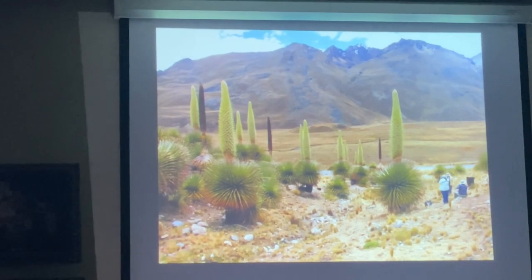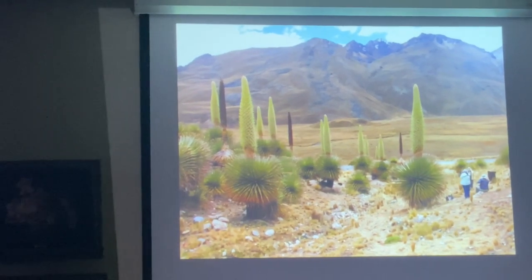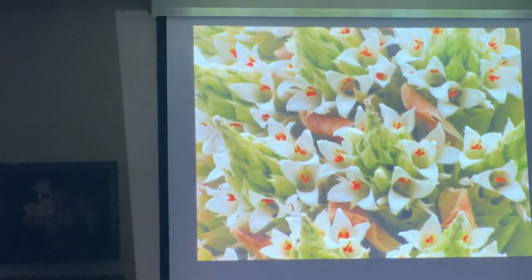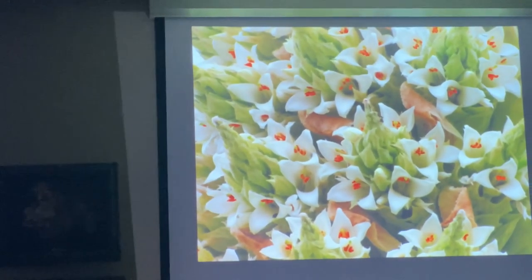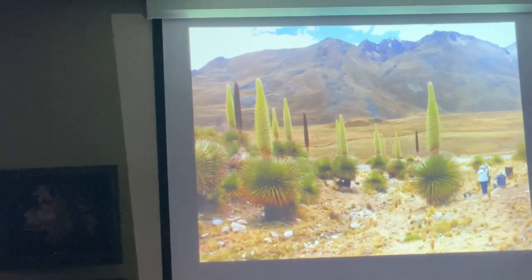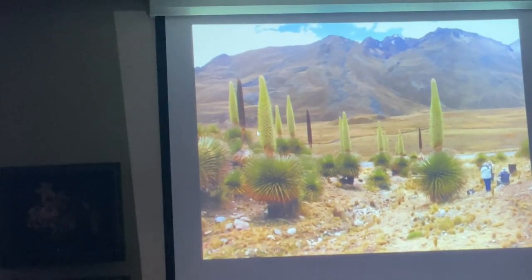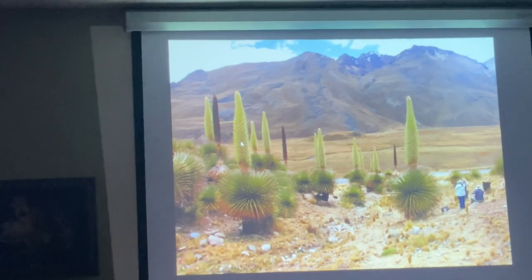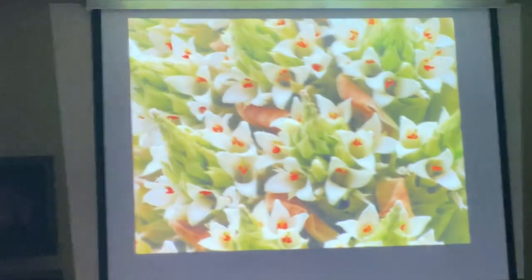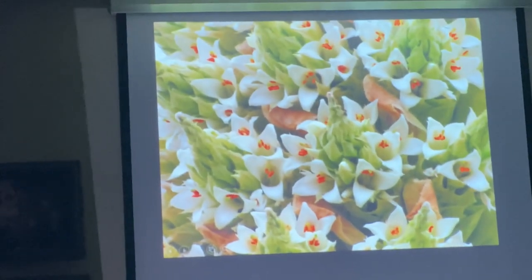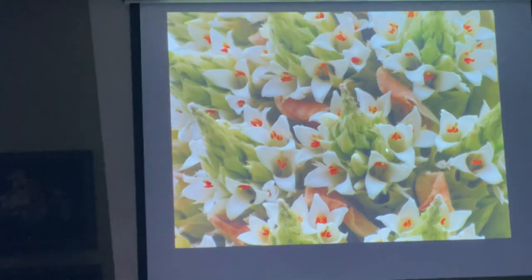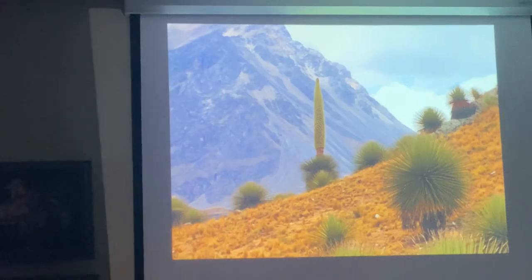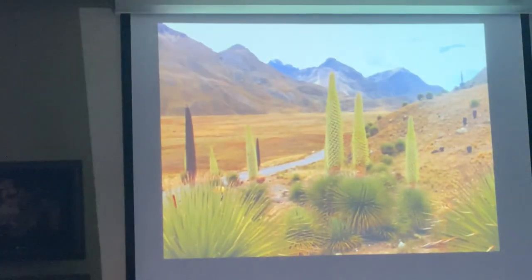It usually matches El Niño events. I've seen this event twice just by luck, being there the year after an El Niño event, and that's when you have this mass flowering event. Most of the times you go, you only see maybe one or two plants in bloom. This is the tallest inflorescence in the world, and we are at about 11,000 feet. Every single branch here has about 10 to 11 flowers, and it is pollinated by giant hummingbirds, which are the main pollinators.